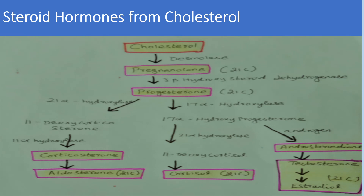In the synthesis of steroid hormones from cholesterol, the first step is the formation of pregnenolone from cholesterol in the mitochondria, in the presence of the enzyme desmolase, which undergoes sequential hydroxylation at C20 and C22 carbons in the side chain of cholesterol, followed by cleavage with the removal of a 6-carbon fragment.